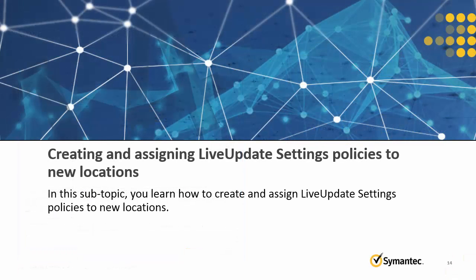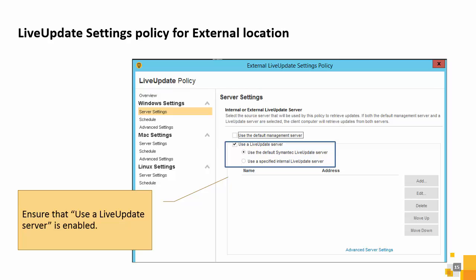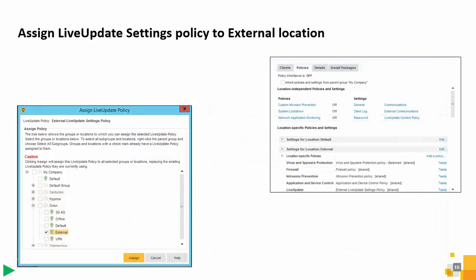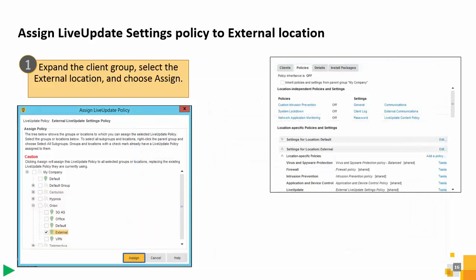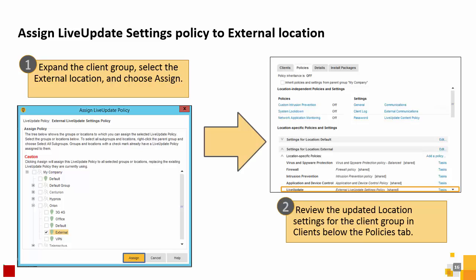Create a Live Update Settings policy in the Policies section. After naming the Live Update Settings policy, click Server Settings. For the external location, clients retrieve content from the public Symantec Live Updates server. The new policy is ready to be assigned to the external location. After the policy is assigned, you can review the updated location settings for the client group and clients below the Policies tab.